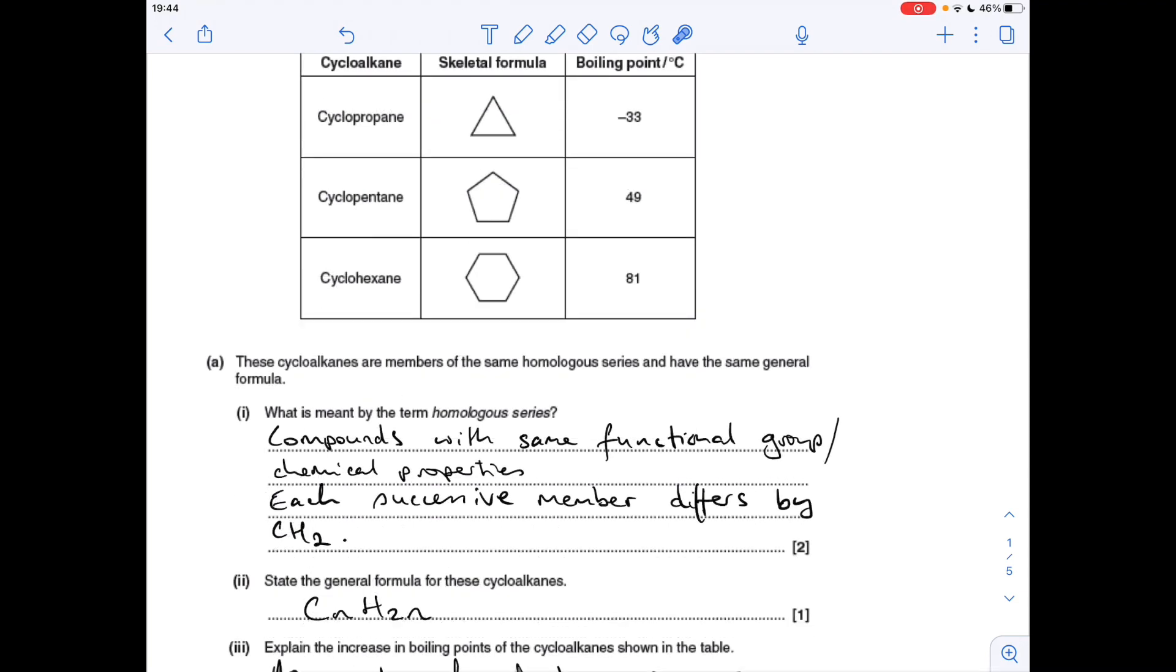The general formula for these cycloalkanes is CNH2N, because at each carbon you've got two hydrogens, so obviously you're going to have double the amount of hydrogens to carbons.